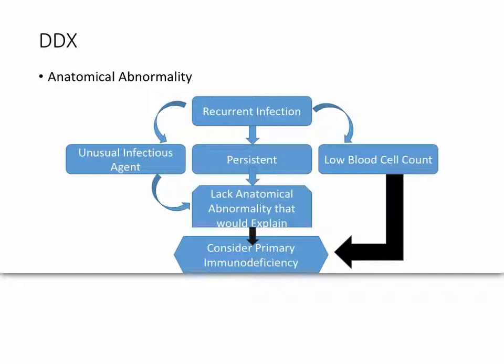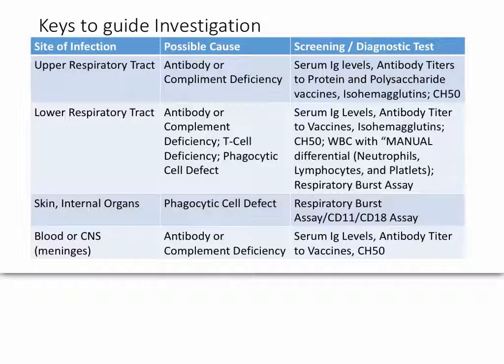Some sources say when working up a primary immunodeficiency, you cannot immediately rule out an acquired immunodeficiency. An HIV test would be warranted for this young child, even though she was born in the U.S. where mothers are typically screened during pregnancy. The key to working up your diagnosis will be asking yourself where the location of the infection is and what are the characteristics. In our case, we had sinopulmonary infections — upper respiratory with runny nose and lower respiratory with pneumonia — and antibody and complement deficiencies are listed as possible causes for both.